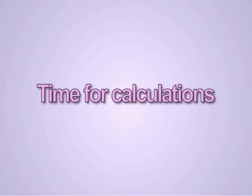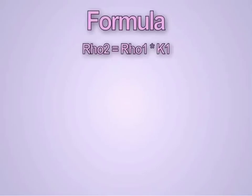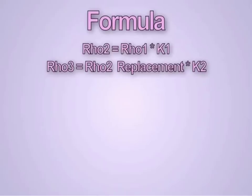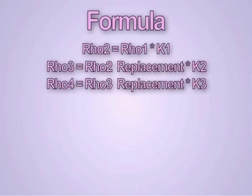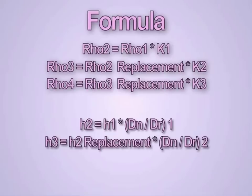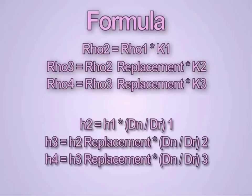And don't be scared, they are just little ones though. This is the formula that would be using for the calculation. Rho 2 equals Rho 1 times K1. Rho 3 equals Rho 2 replacement times K2. Rho 4 equals Rho 3 replacement times K3. If you have Rho 5 in your case, Rho 5 will be equal to Rho 4 replacement and K4, and so on and so forth. And the same thing applies to the H1, H2, H3, H4 too.